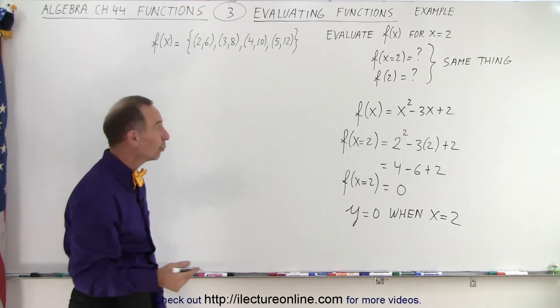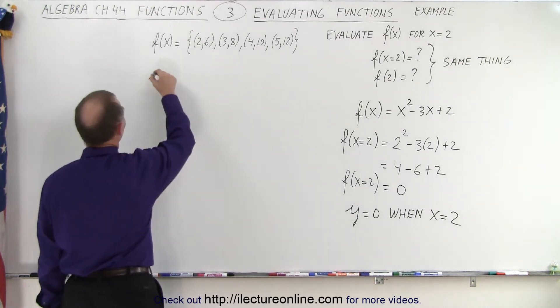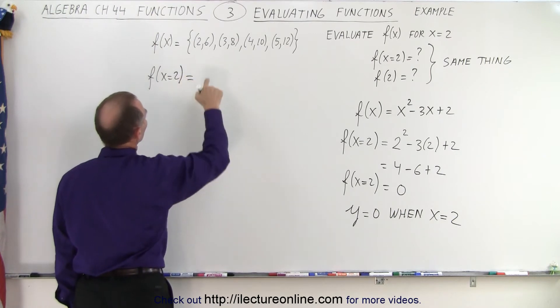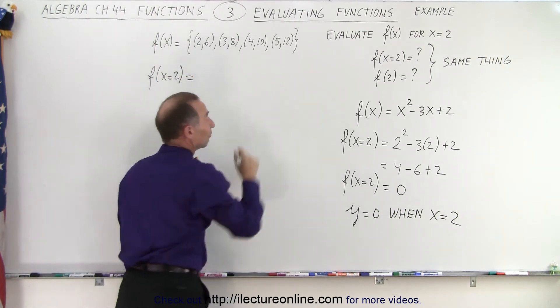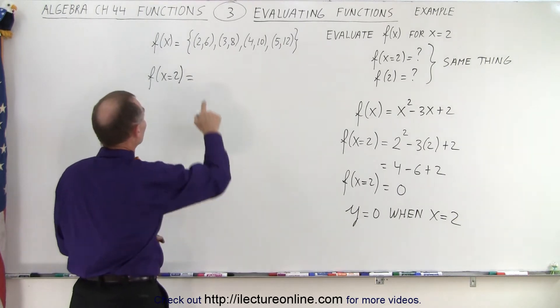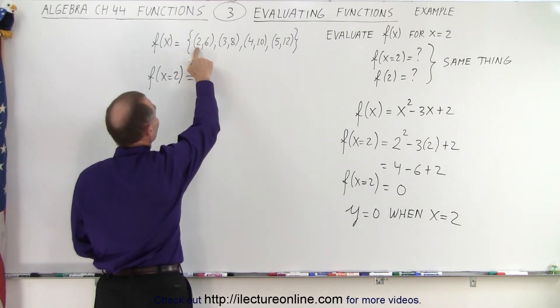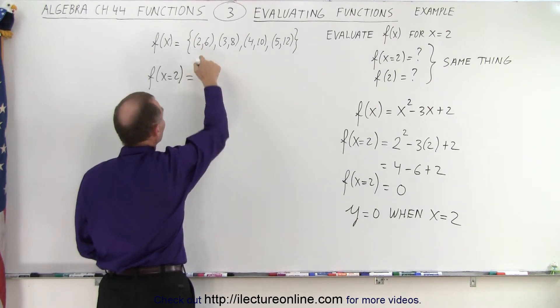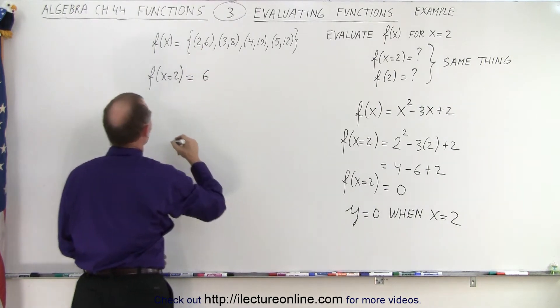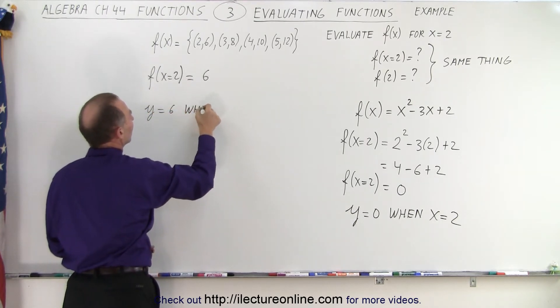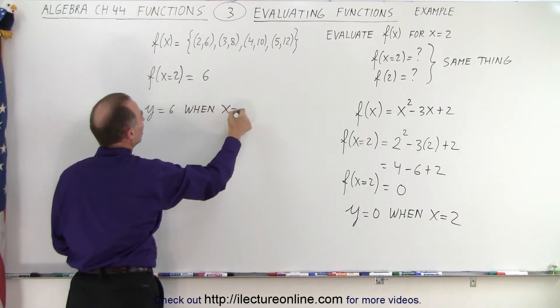So let's do it over here. We're going to evaluate the function when x equals 2. So f when x is equal to 2 is equal to, now we look at the ordered pairs, and we're looking for one pair where the first number, the x value, is 2, which is, of course, this one right here, which means that the corresponding function, or the corresponding y value, is 6, so that's equal to 6. In other words, y equals 6 when x equals 2.